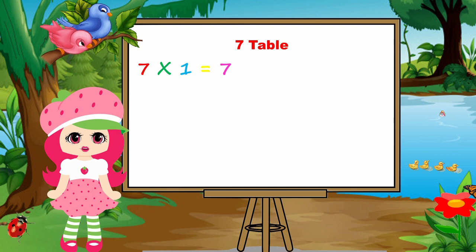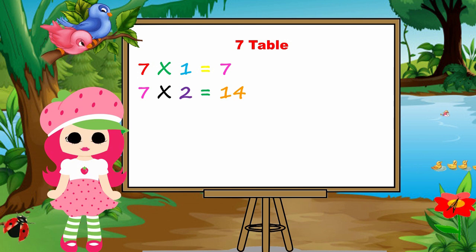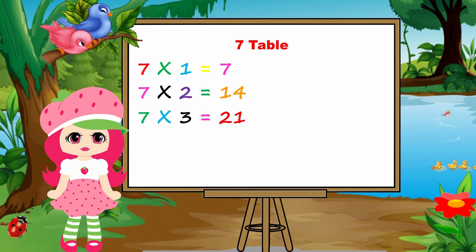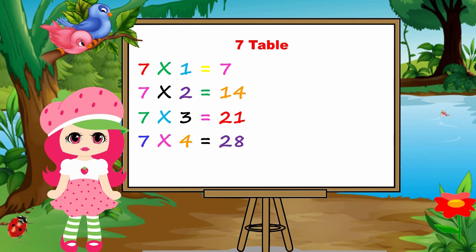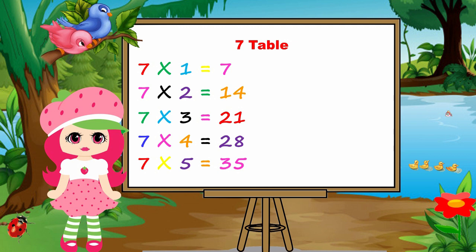Seven ones are seven. Seven twos are fourteen. Seven threes are twenty-one. Seven fours are twenty-eight. Seven fives are thirty-five.